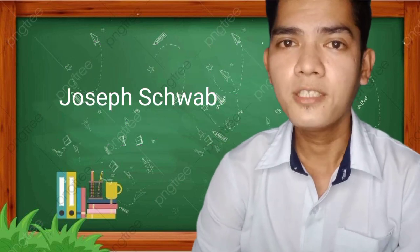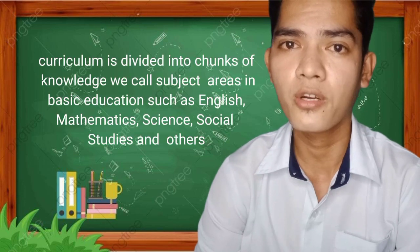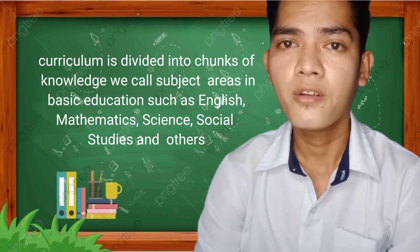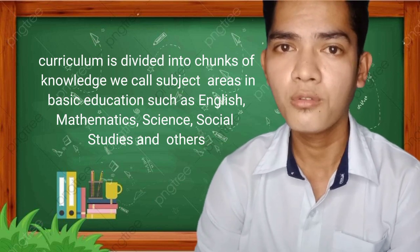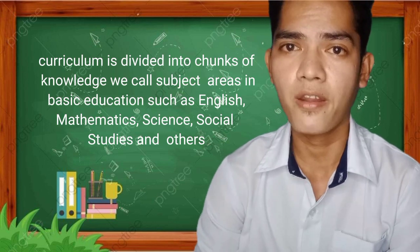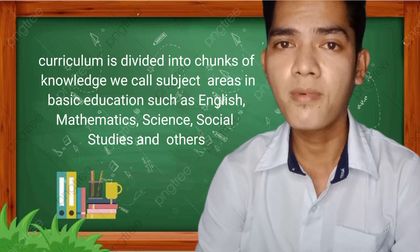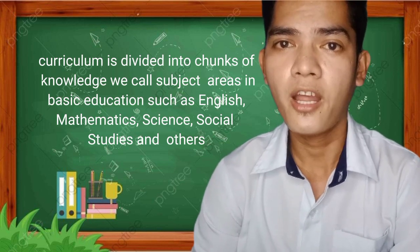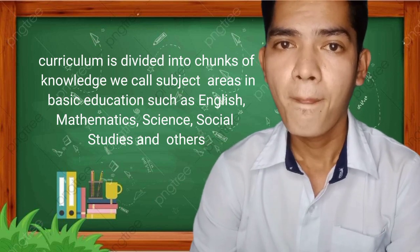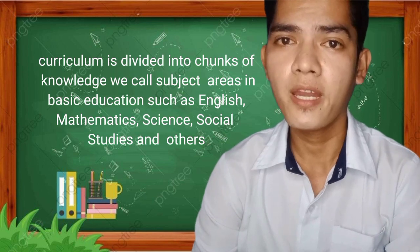Joseph Schwab's definition leads us to the view that discipline is the sole source of curriculum. Thus, in our education system, curriculum is divided into chunks of knowledge we call subject areas in basic education, such as English, mathematics, science, social studies, and others. In college, disciplines may include humanities, sciences, languages, and many more.